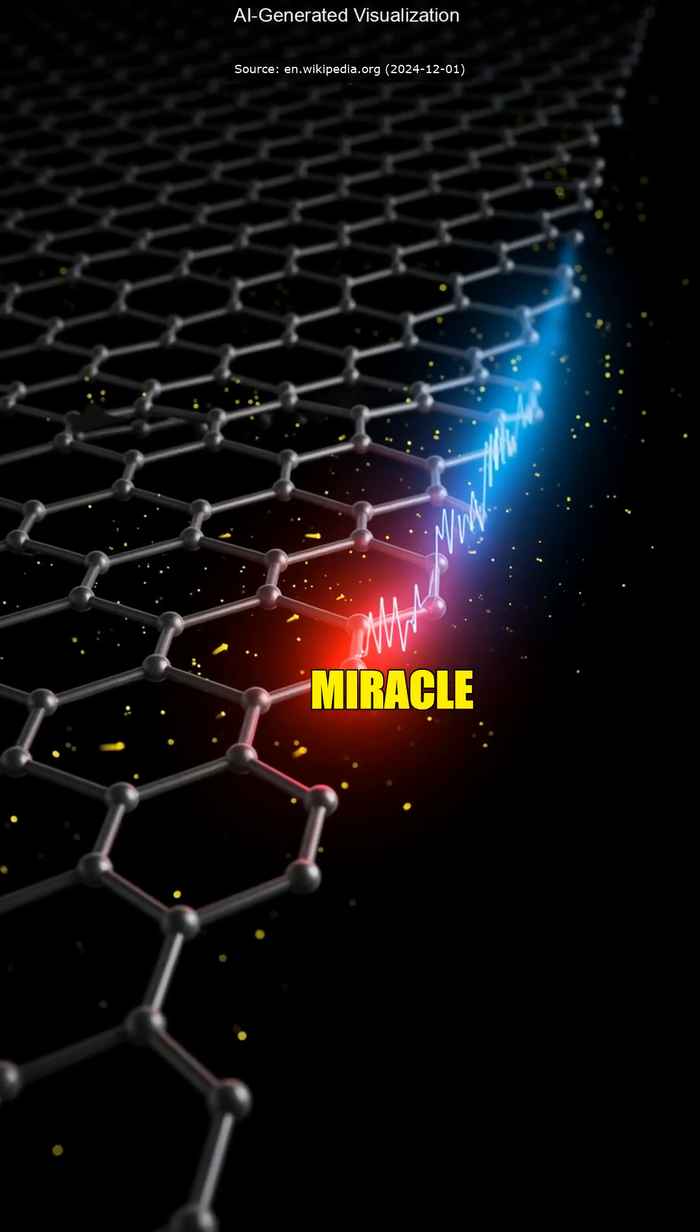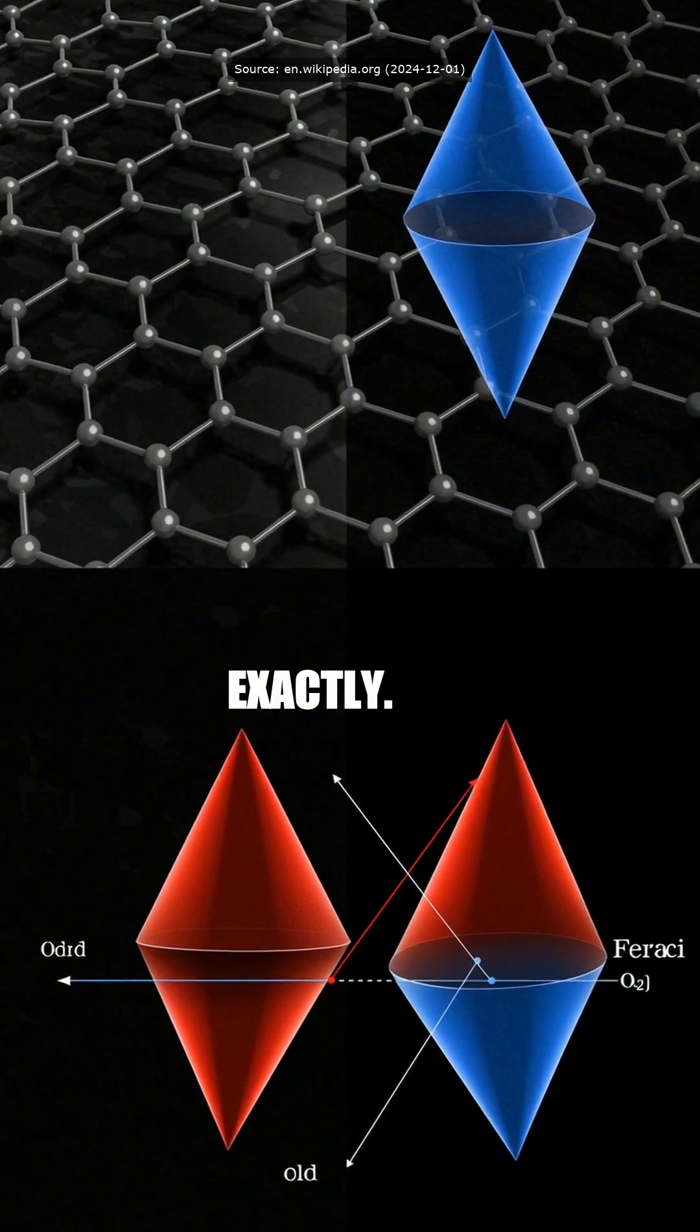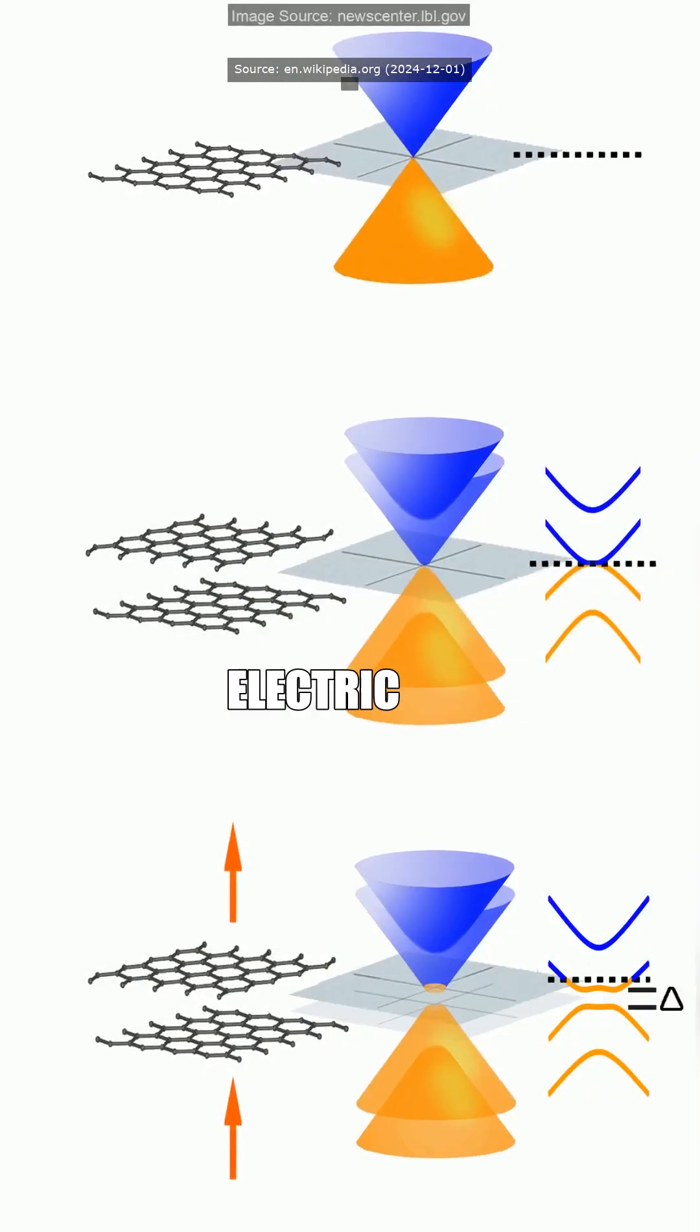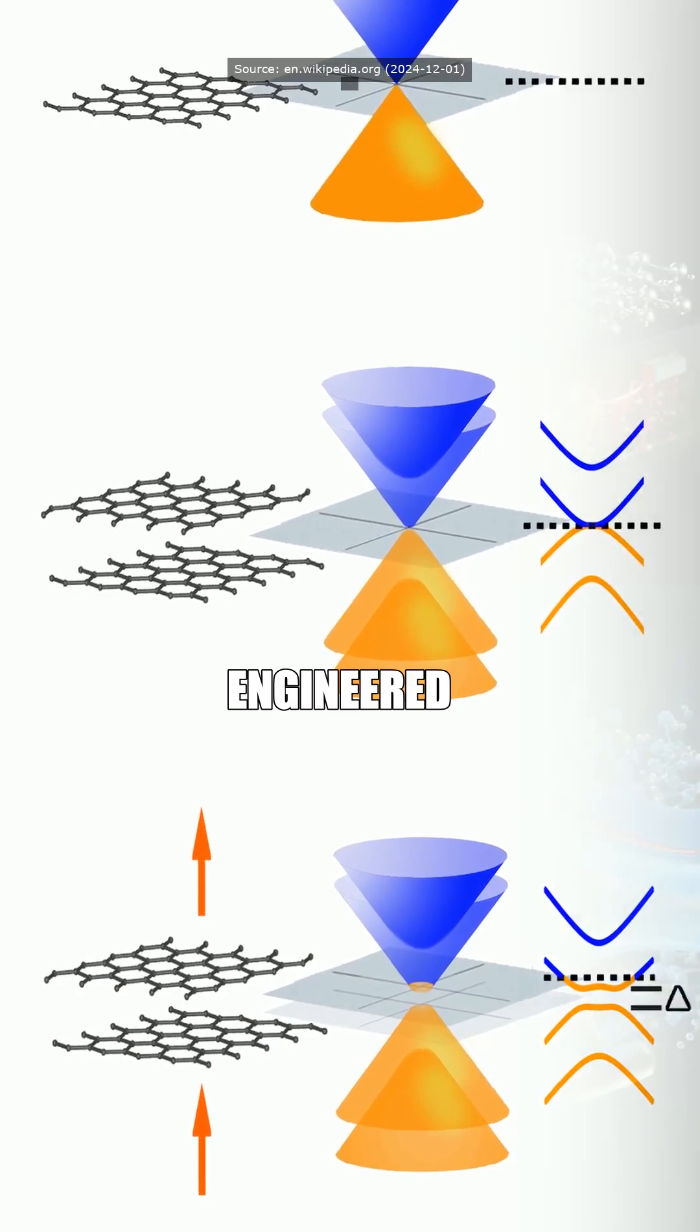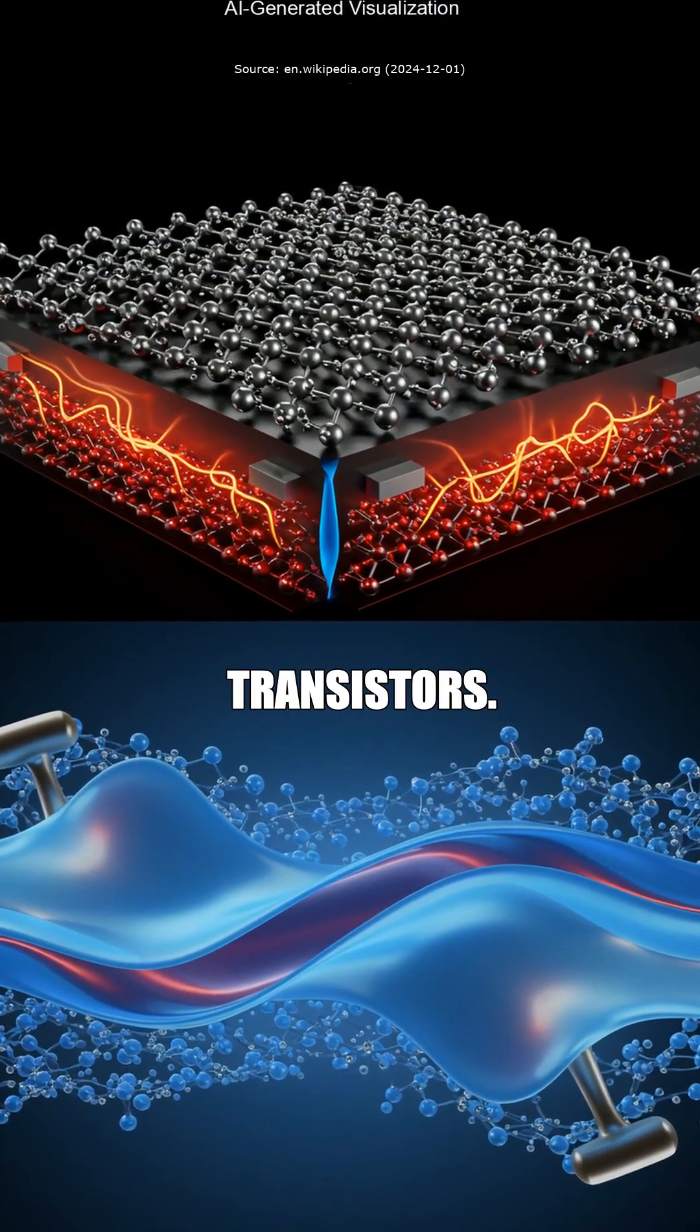Graphene? Ain't that the miracle stuff that never quite got its shit together because it couldn't control electricity? Exactly. Graphene had no band gap, the key to controlling electric conductivity, but researchers finally engineered one, unlocking graphene's insane potential for transistors.